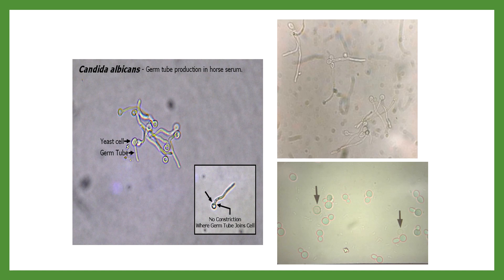Candida albicans is the only yeast that will make germ tubes. In the image on the left, Candida albicans almost looks like lollipops — you have the mother cell, which is the yeast cell, and coming out of that cell is the germ tube, with no point of constriction between the pseudohyphae and the mother cell. The bottom right image shows a yeast that is not Candida albicans — probably Cryptococcus or Torulopsis glabrata. This is an example of blastoconidia only, with no terminal chlamydospores.